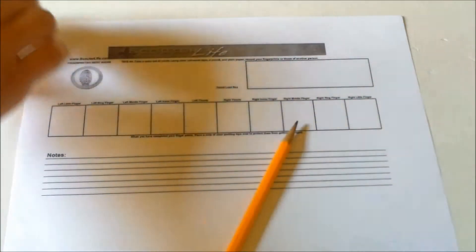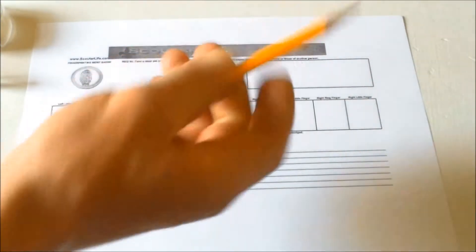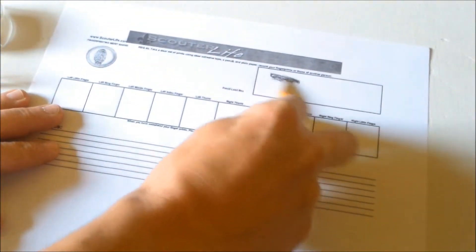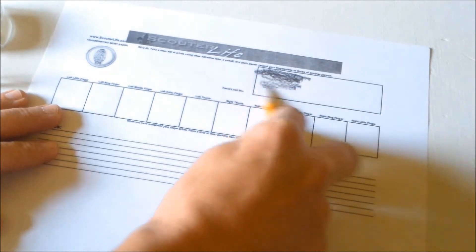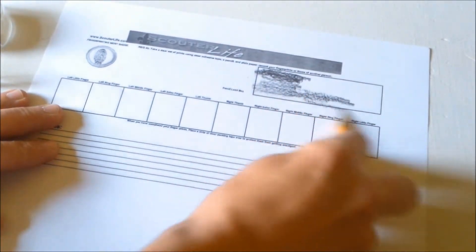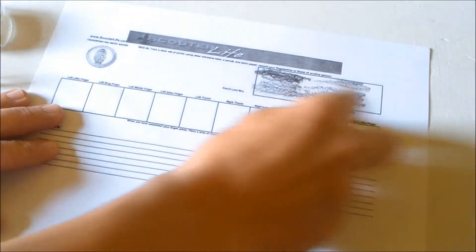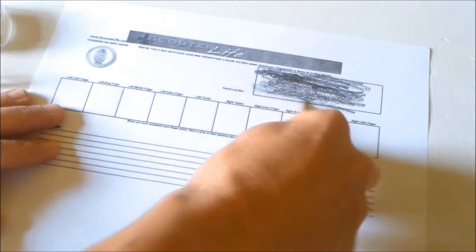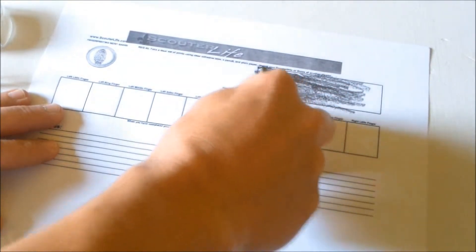To start, you want to take your pencil and color in the box. Get as much of that pencil lead in there as you can without making too much.